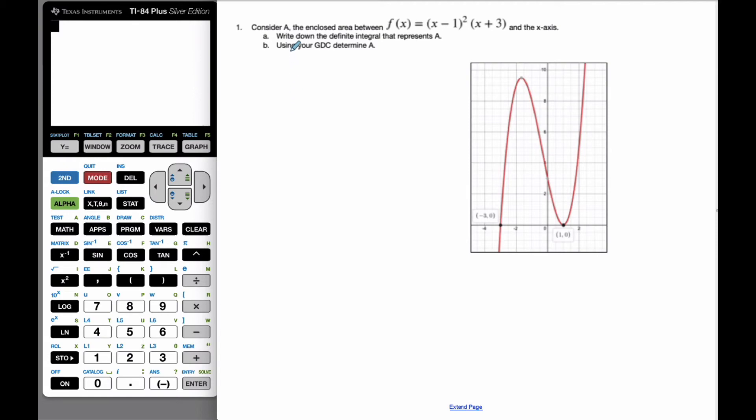Consider the enclosed area between this function f(x), the red function, and the x-axis. To recognize the enclosed area means we're looking for, here's the x-axis, what's enclosed by it, so it's all this area here.